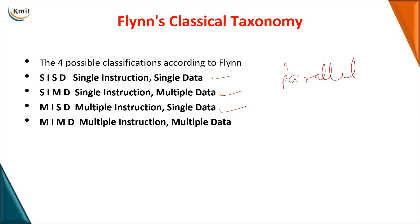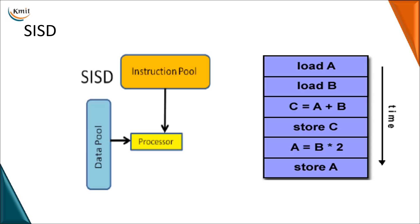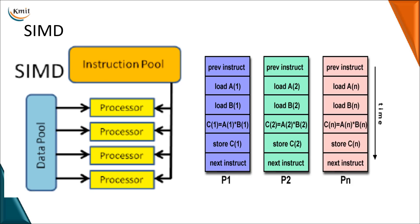These are the parallel approaches or Flynn's classification used for parallel computing. For Single Instruction Single Data (SISD), you take one instruction and one data — for example, c = a + b, loading the values and performing the operation. For Single Instruction Multiple Data (SIMD), the instruction is the same but it is performed on different data. For example, the instruction is multiplication, but the first time you pass a[1] and b[1], next time a[2] and b[2], up to a[n] and b[n]. The inputs change while the instruction stays constant — hence single instruction, multiple data.